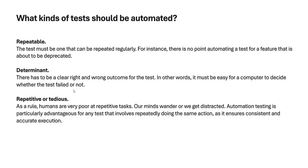Repetitive or tedious — as a rule, humans are very poor at repetitive tasks; our minds wander and we get distracted. Automation testing is particularly advantageous for any test that involves repeatedly doing the same action, as it ensures consistent and accurate execution. When you have repeated tasks like regression testing, it would frustrate you to do them manually, but automation scripts save time and maintain accuracy.